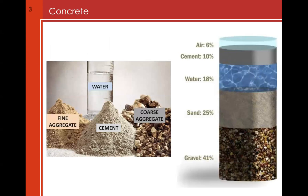Before starting, it's good to give a short recap of what concrete is. Concrete is made of four main parts: water, fine aggregate, coarse aggregate, and cement. These parts are combined together to provide a liquid or fluid material that, after a certain curing time, becomes strong. You can also see here an overview of the typical amount of each part in terms of percentage of volume.